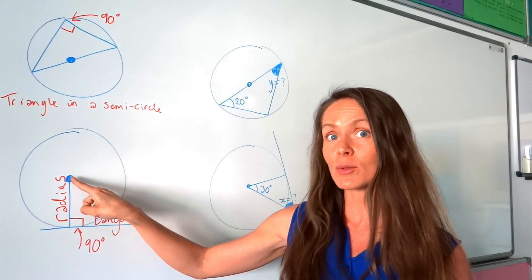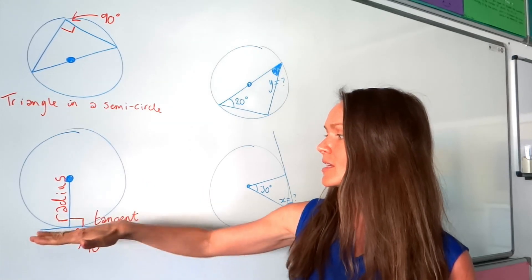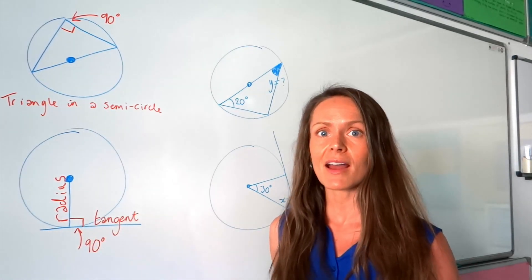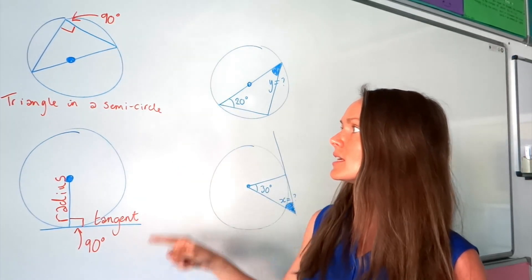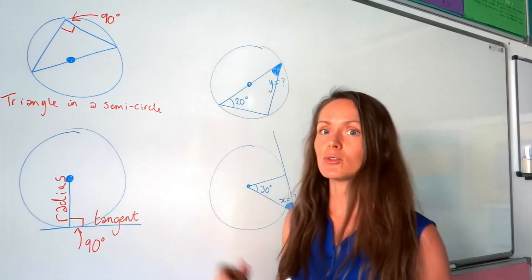And this, hopefully you know this one already, this is the radius. Whenever you see the tangent and the radius, they always make an angle of 90 degrees with each other. So you've got two angles of 90 degrees that you need to remember in those two different situations.